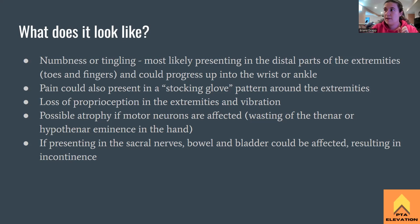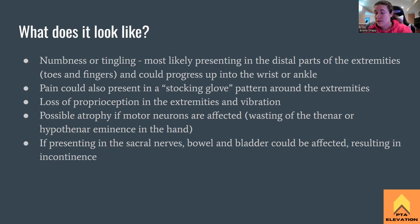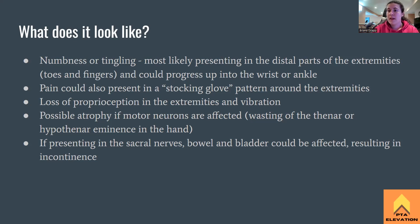Think of those big rubber gloves that go halfway up your forearm — that's the glove pattern. And then think of leg stockings or compression socks that go up to mid-calf — that's the stocking pattern. That's the presenting pain distribution we'd see because the nerves are not firing correctly. We'll also see loss of proprioception in the extremities and loss of vibration sense. For example, a patient might not be aware of where their foot is and trip, or they might not feel their phone vibrating in their hand.